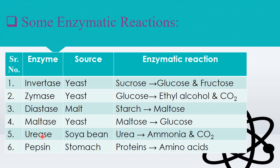Conversion of urea to ammonia and carbon dioxide takes place in the presence of urease. Notice that each enzyme name ends in '-ase'. They are named with respect to either the reactant or the product. Glucose and fructose are known as invert sugar because glucose is an aldehyde whereas fructose is a ketone — hence the enzyme is named invertase. Similarly, from the reactant maltose (a disaccharide sugar) the enzyme is called diastase, and from urea the enzyme is named urease.